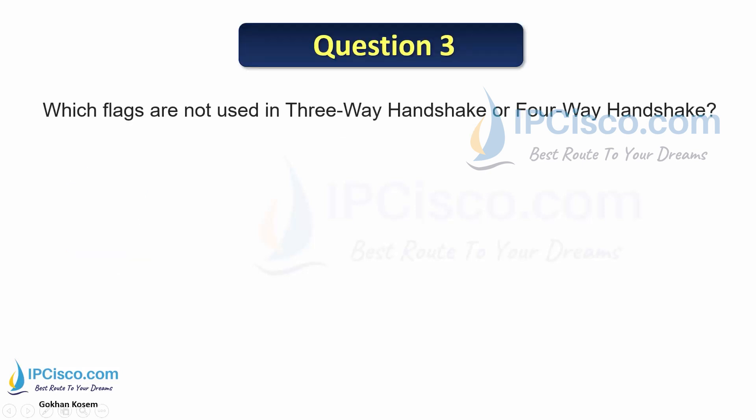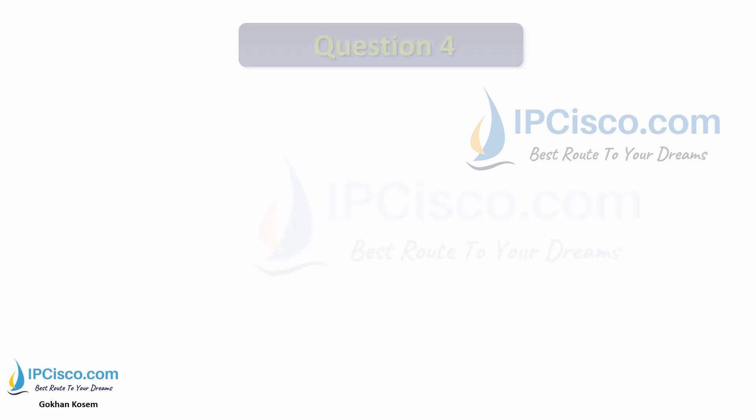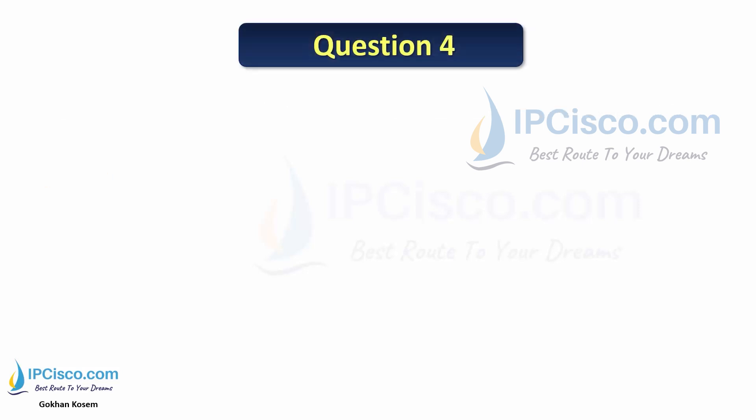Question 3: Which flags are not used in the three-way handshake or four-way handshake? The options are SYN, URG, FIN, ACK, and PSH. The answer is URG and PSH flags are not used in the TCP three-way handshake.